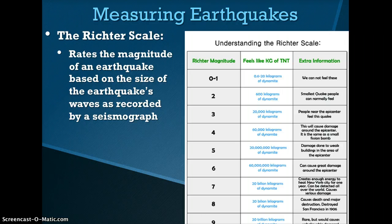Another scale is the Richter scale. The Richter scale rates the magnitude of an earthquake based on the size of the earthquake's waves as recorded by a seismograph. The image explains how the magnitude of an earthquake can be felt. The left column rates the magnitude using the Richter scale, the middle column relates the earthquake to dynamite, and the right column gives extra information about whether the earthquake can be felt and if damage may be caused.